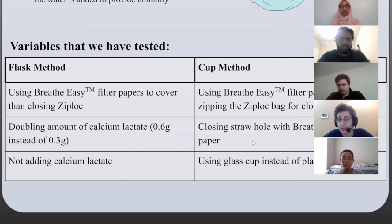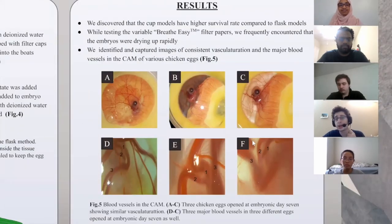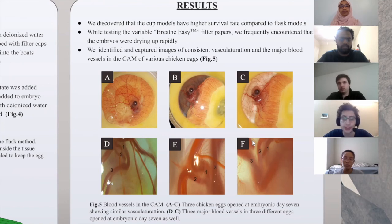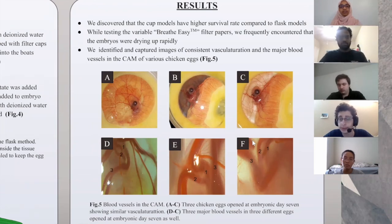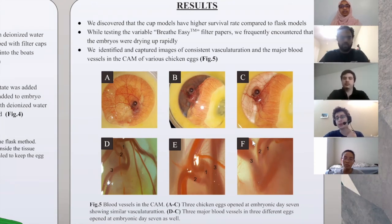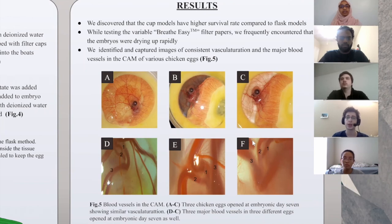In terms of the results, we were able to see that the cup models had a higher survival rate compared to the flask models. We also found that when we used the Breathe-Easy filters, the eggs came out very dry, as the filter paper restricted too much oxygen from reaching the egg. Using these variables, we were able to enhance our methods and obtain clear photos of the vasculature in the embryos along with the major blood vessels of the CAM.